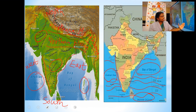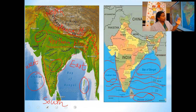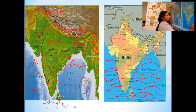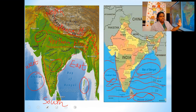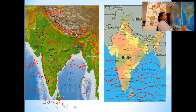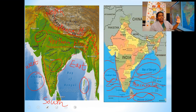On the western side, we have the Arabian Sea. On the eastern side, we have the Bay of Bengal. Then in the southern part, we have the Indian Ocean. As the three parts of our country are surrounded by water, the southern part of India is called a peninsula.